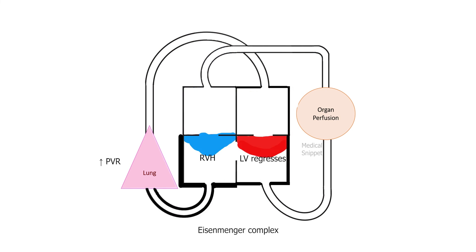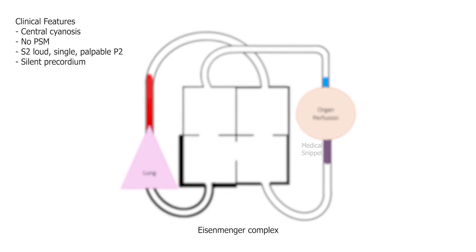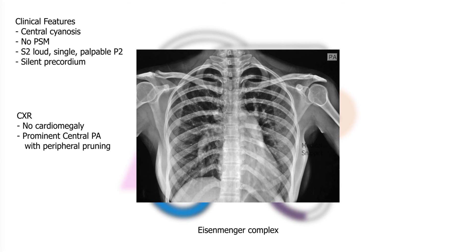On examination, there will be central cyanosis, the VSD murmur disappears, S2 will be loud, single, and palpable, and there will be silent precordium. In chest X-ray, there will be regression of cardiomegaly. Central pulmonary artery will be prominent with peripheral pruning.